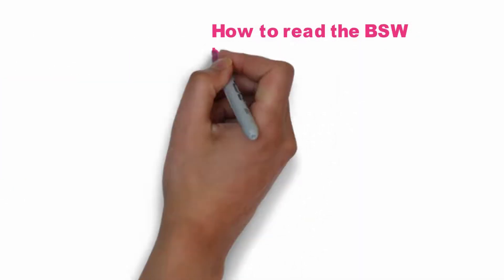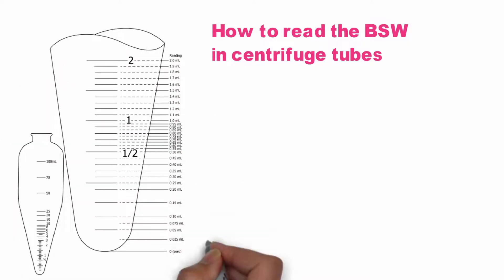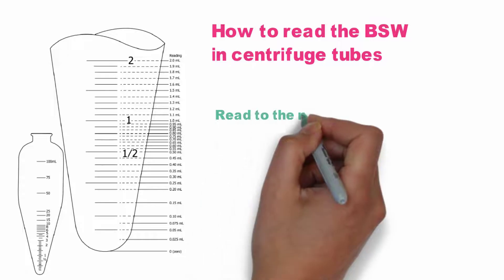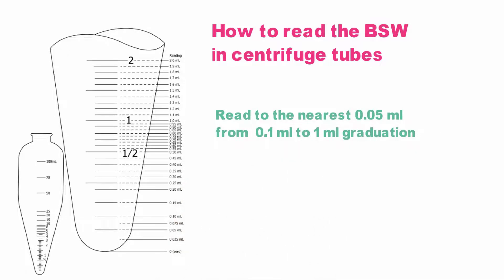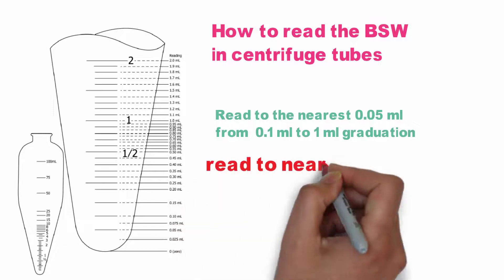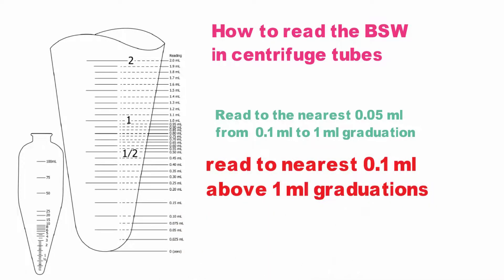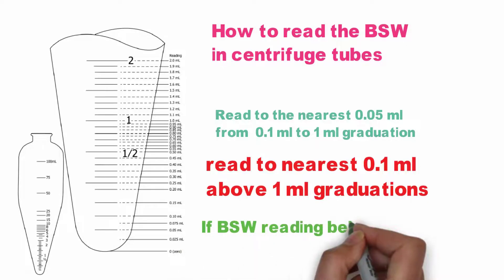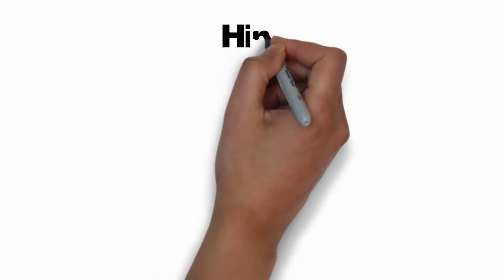As a reminder on how to read the BSW in centrifuge tubes: read to the nearest 0.05 ml from 0.1 ml to 1 ml graduation; read to the nearest 0.1 ml above 1 ml graduation; and if the BSW reading is below 0.1 ml, estimate to the nearest 0.025 ml.